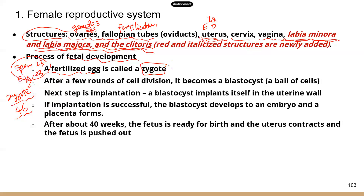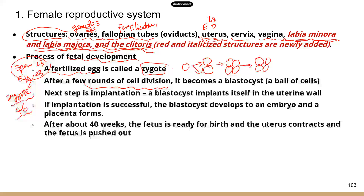The zygote will go through a few rounds of very rapid cell division. One cell becomes two, two becomes four, four becomes eight — you can imagine there's more on the other side, so it really looks like a ball of cells. Eventually, after a few rounds of mitosis, this will become a blastocyst — it really just looks like a ball of cells.